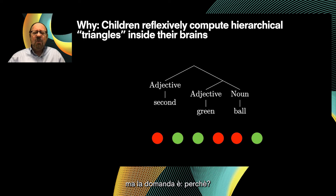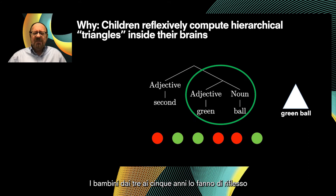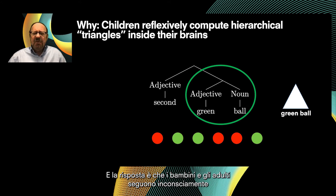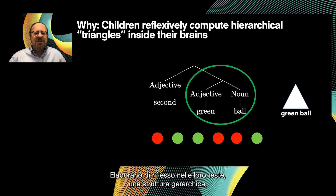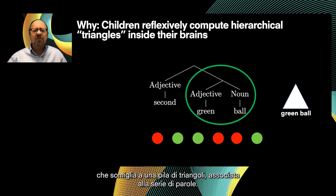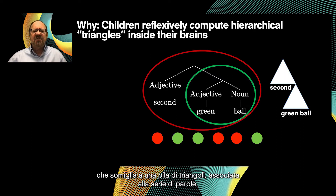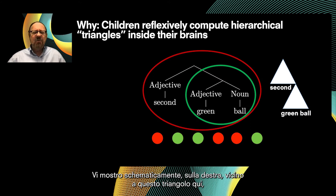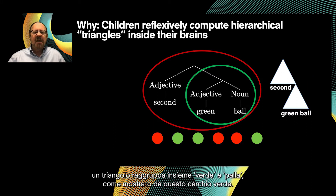Why do people always choose ball number three? Children do this reflexively by ages three to five. The answer is that children and adults unconsciously follow this first core computation of human language: they compute reflexively in their heads a hierarchical structure that looks like a stack of triangles associated with the string of words.